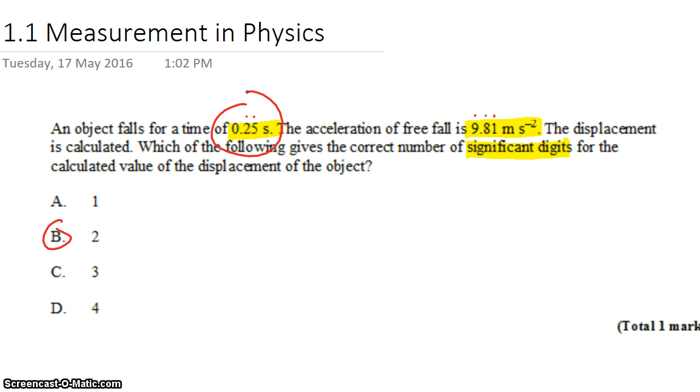So when multiplying, when dividing, as we will have to do to calculate the displacement, you want to wind up with an answer that has the same number of significant figures as your least precise measurement. So the measurement with the fewest significant figures. 2, 2, 2.